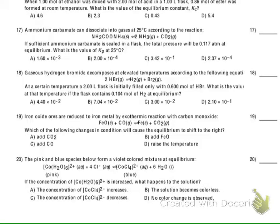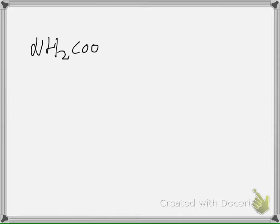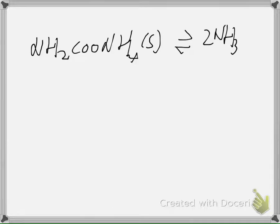Question number 17: ammonium carbonate can dissociate into gases at 25°C. If sufficient ammonium carbonate is sealed in a flask, the total pressure will be 0.117 atm at chemical equilibrium. What is the value of Kp? Writing the chemical equation: NH₂COONH₄ (solid) ⇌ 2 NH₃ (gas) + 1 CO₂ (gas).